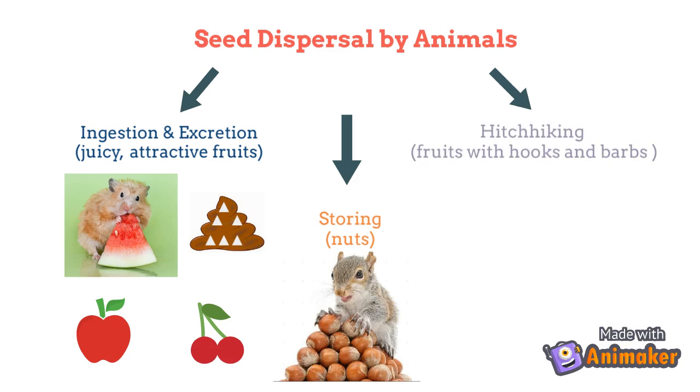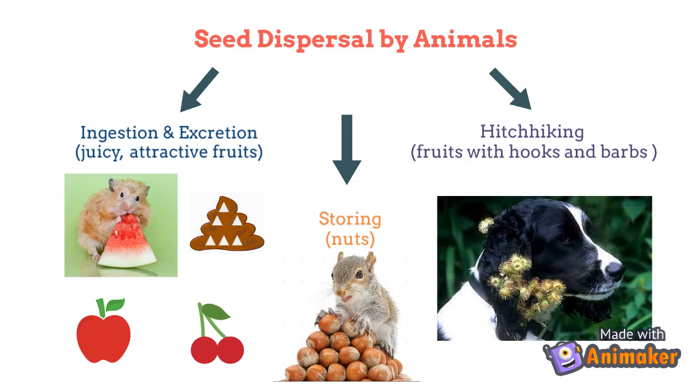Fruits with hooks and barbs, for example the burdock fruit, gets attached to the hair, fur, and wool of animals. This way of seed dispersal is known as hitchhiking.